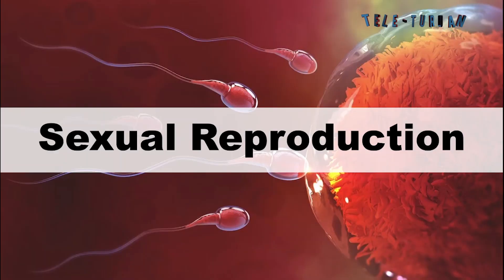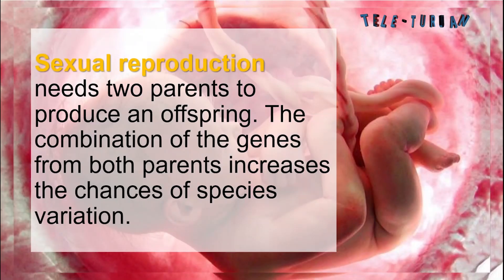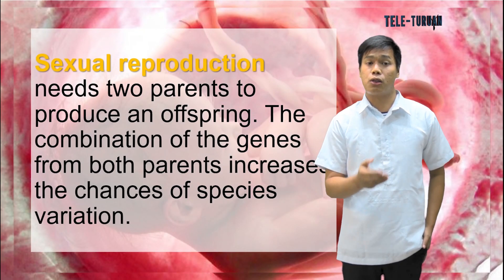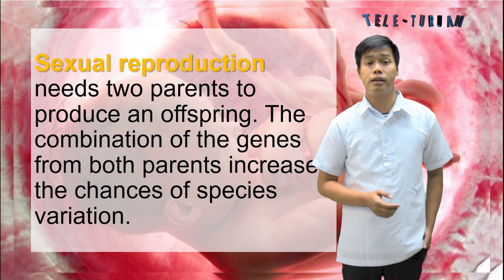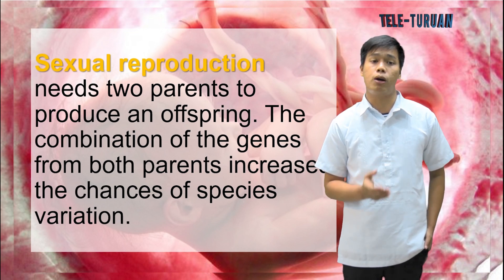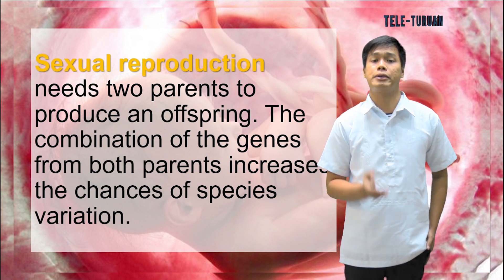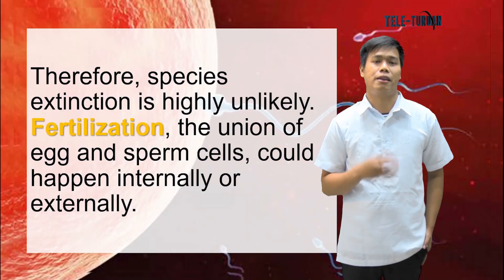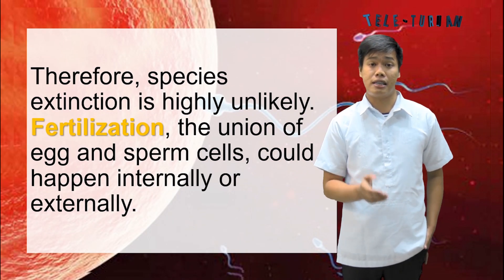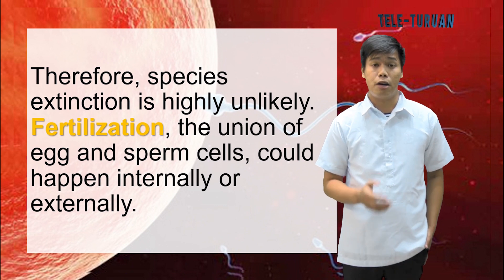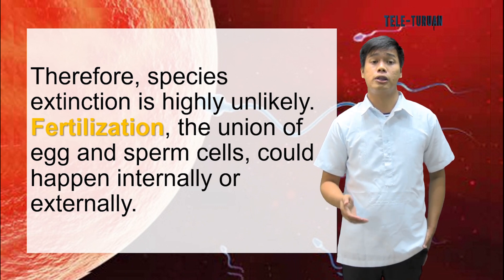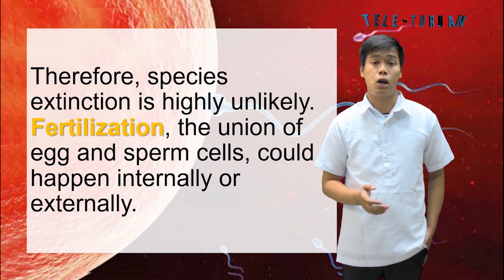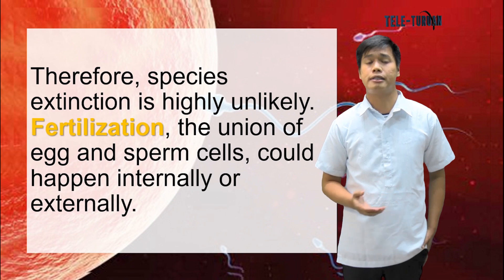Let us proceed to sexual reproduction. Sexual reproduction needs two parents to produce an offspring. The combination of genes from both parents increases the chances of species variation. Therefore, species extinction is highly unlikely. Fertilization — the union of egg and sperm cells — could happen internally or externally.